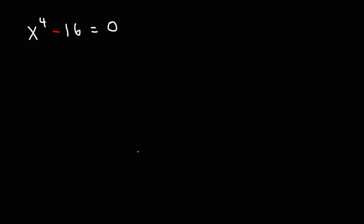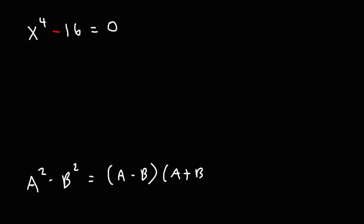We could use this formula. We have a difference of perfect squares: a squared minus b squared can be factored into (a minus b) times (a plus b). So in this example, a squared is x to the 4th. To find a, we need to take the square root of that. The square root of x to the 4th is x squared.